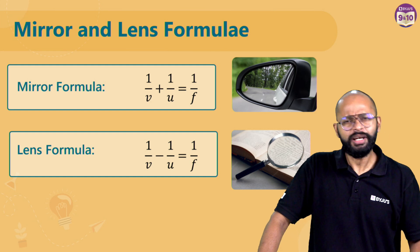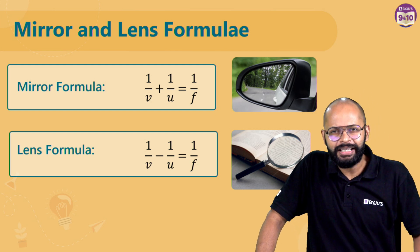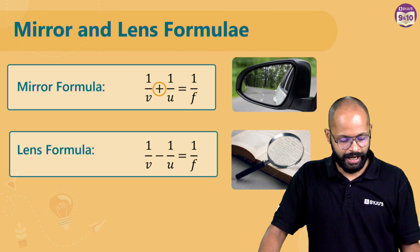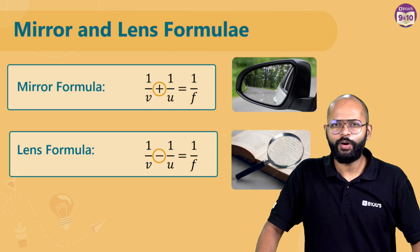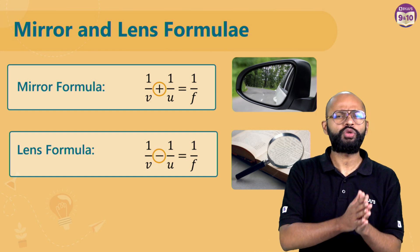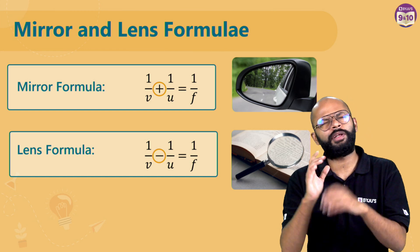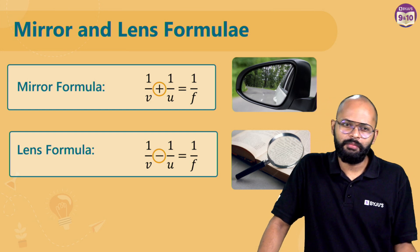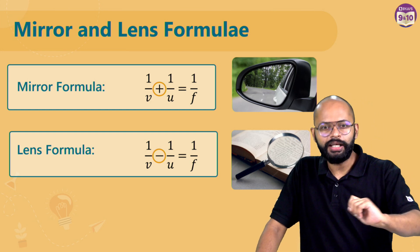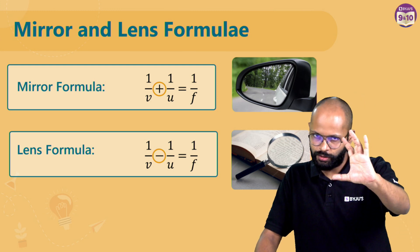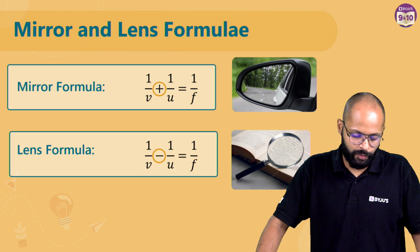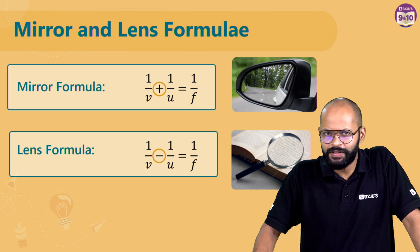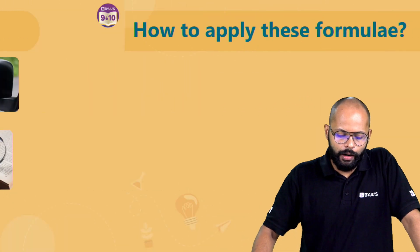Lens formula: 1/v − 1/u = 1/f. The only difference is the plus versus minus sign. This is one place where we usually get confused — in the mirror formula it's plus, and in the lens formula it is minus. So remember: mirror formula uses plus, lens formula uses minus.